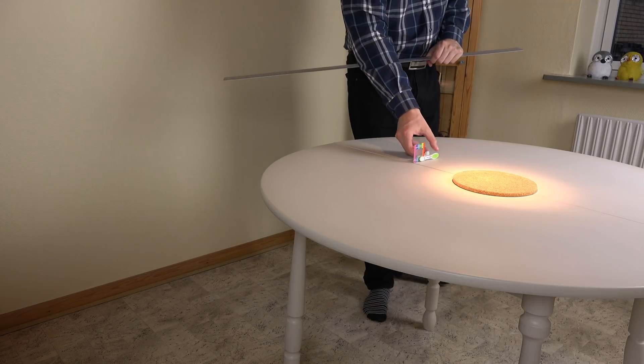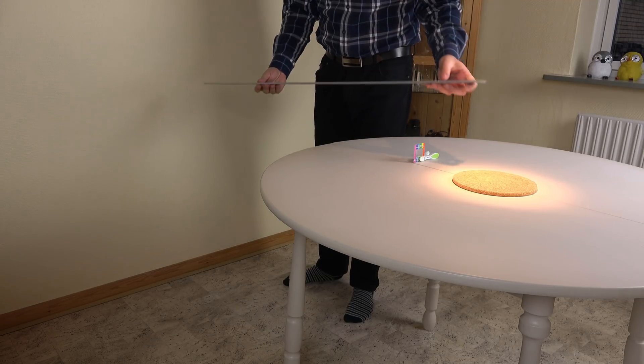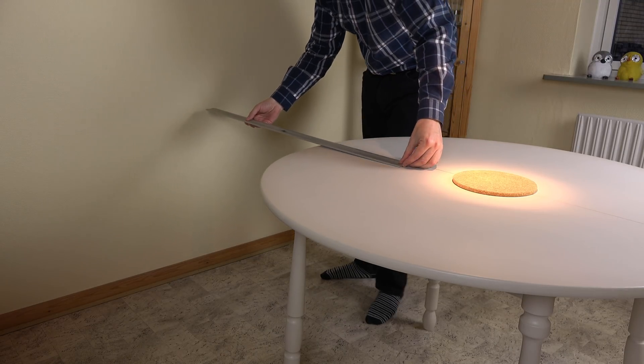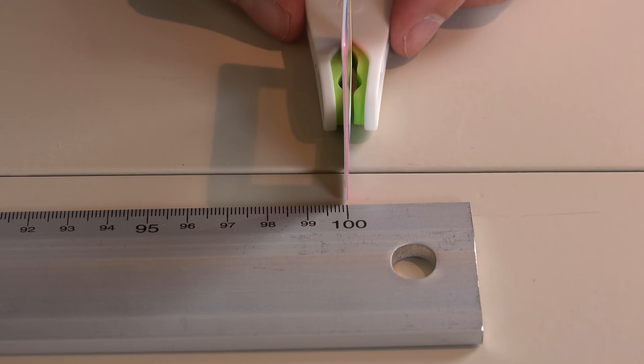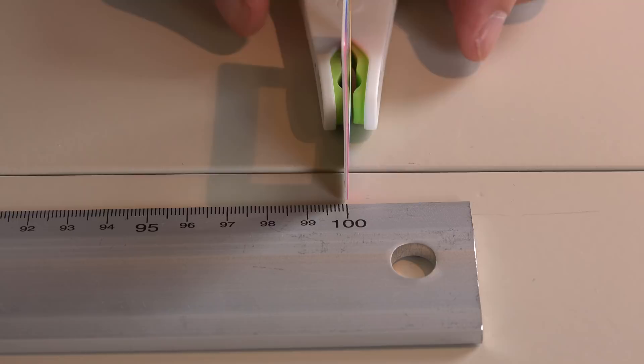Now for the setup. The diffraction grating needs to be at a known distance from the wall I have chosen. I will use 100 centimeters since that's the reach of my big ruler. There we go. The diffraction grating is parallel with the wall and set at exactly 100.0 centimeters.